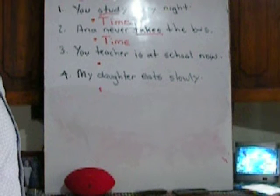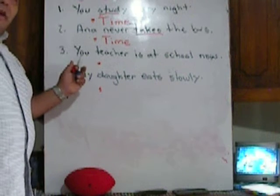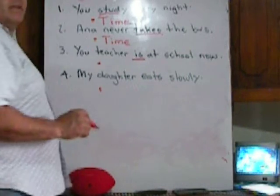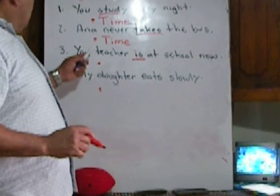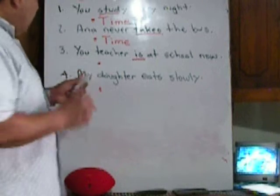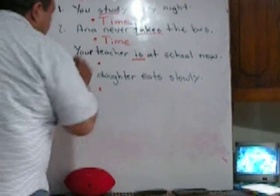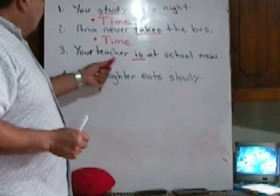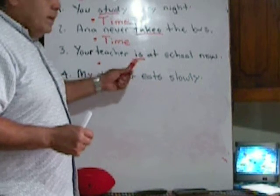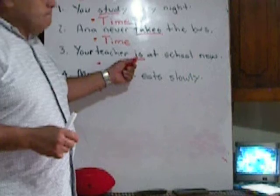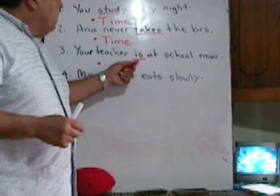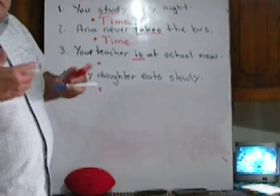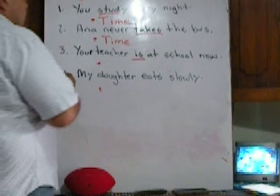Now: 'Your teacher is at school now.' Can you identify the verb? Yes — 'is' is my verb. It's a form of the verb 'to be', remember? So why is it telling me that your teacher is at school right now? It's telling me when. It's an adverb of time.